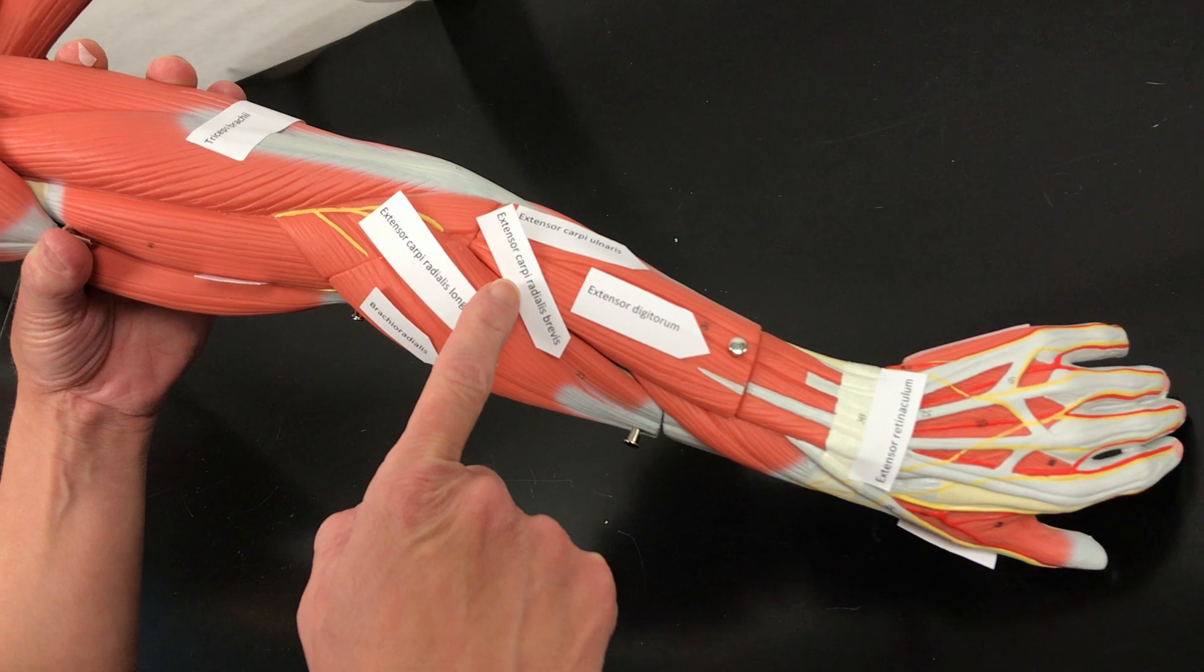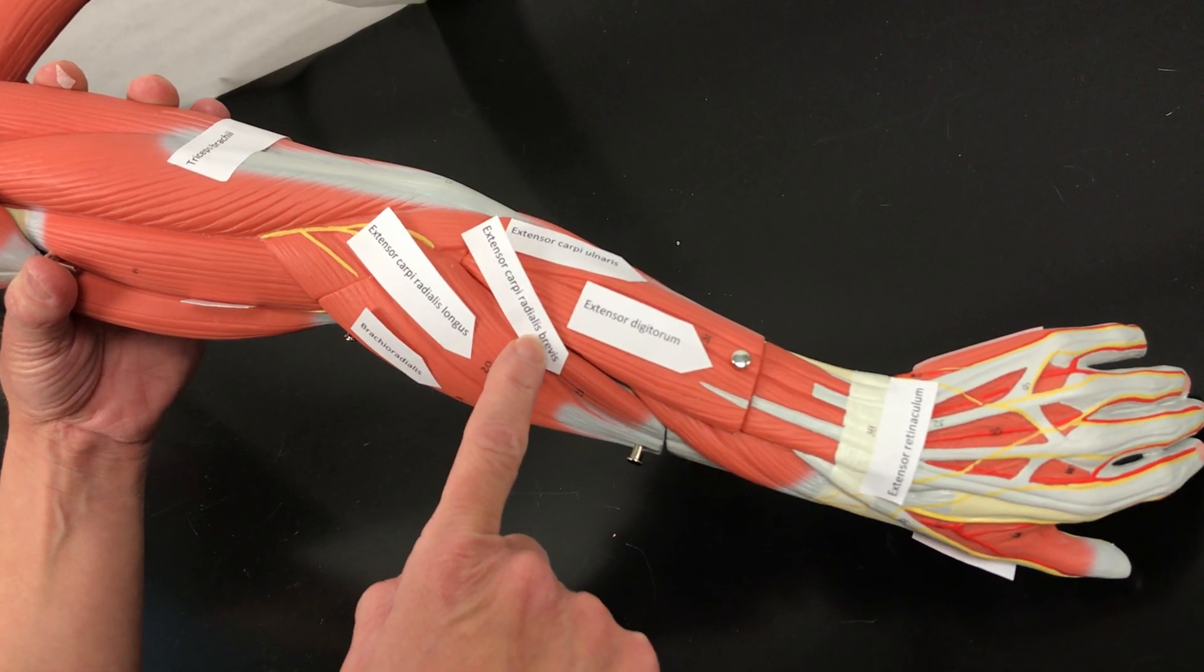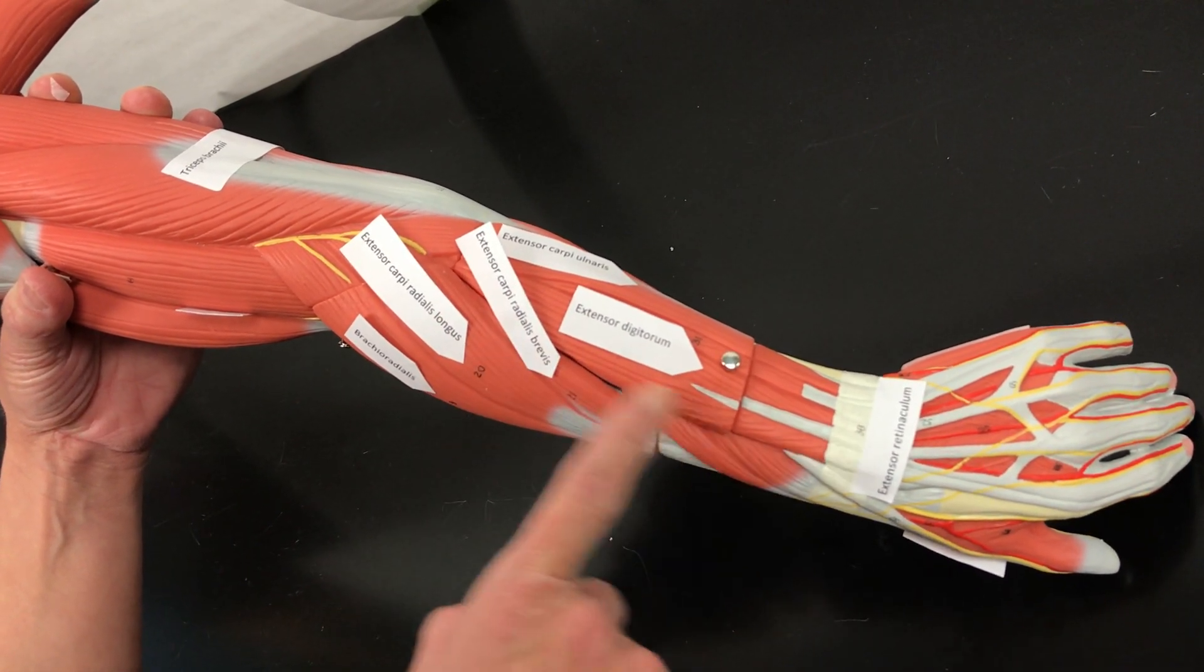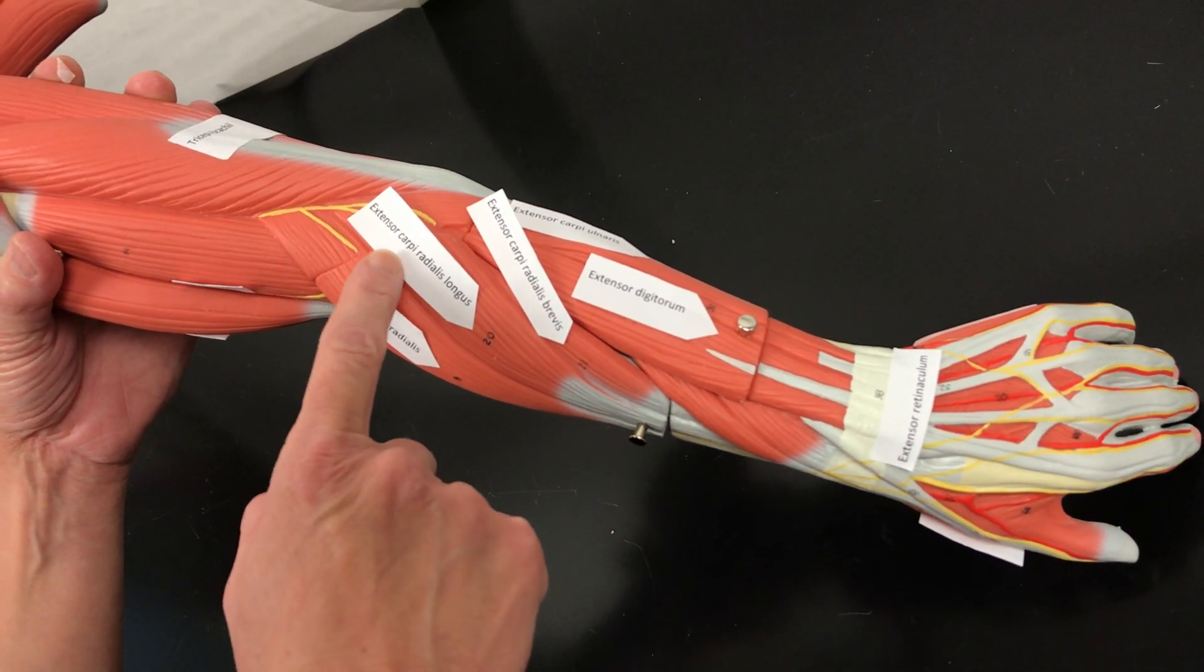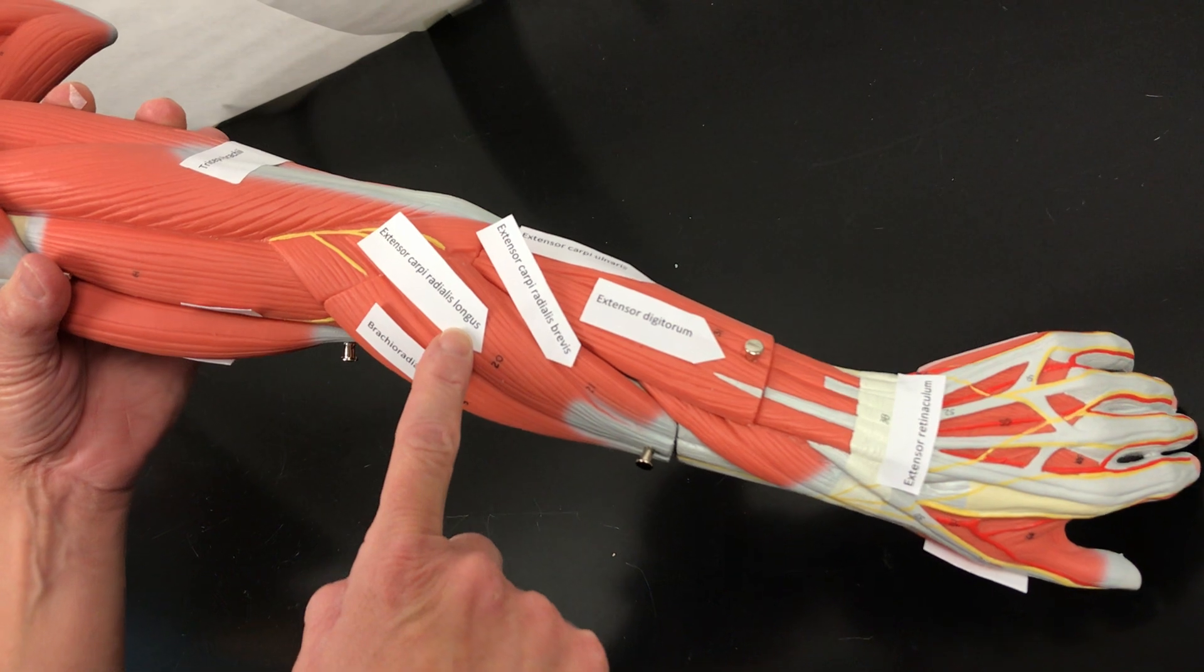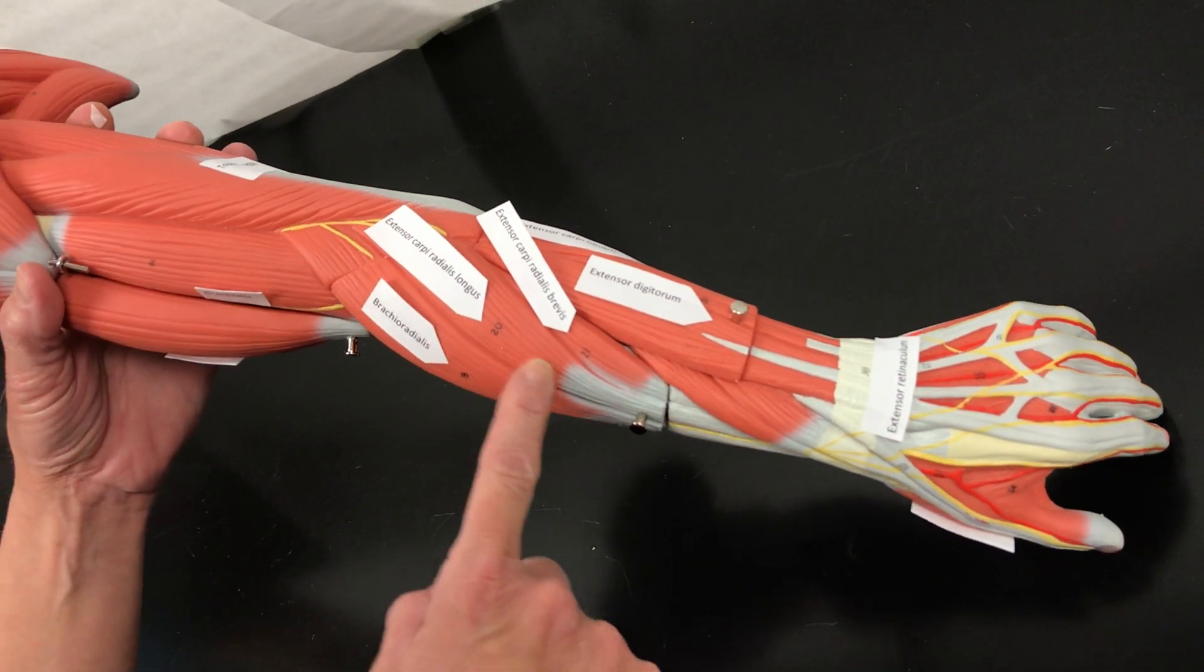We have the extensor carpi radialis brevis, so it extends the carpal. It's on the radius side, and brevis means short. We have the extensor carpi radialis longus, so it's a long one.